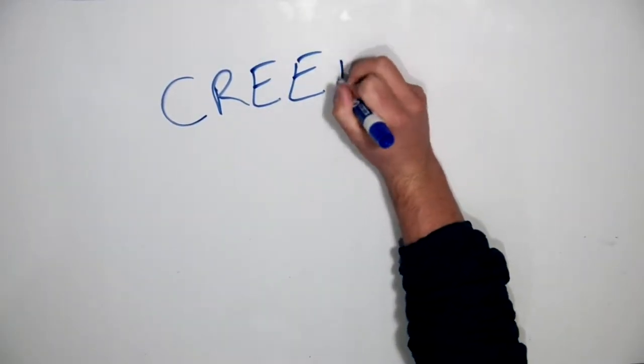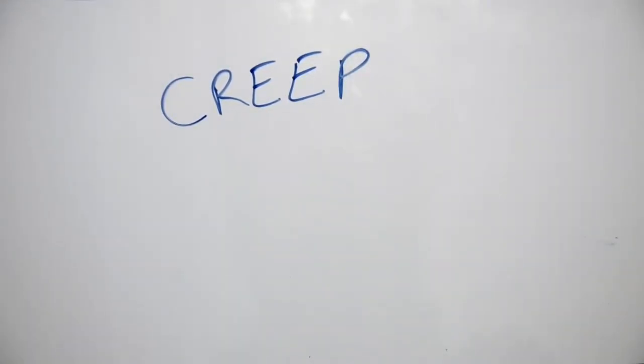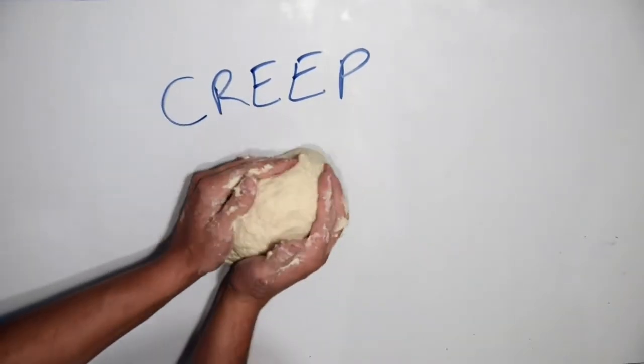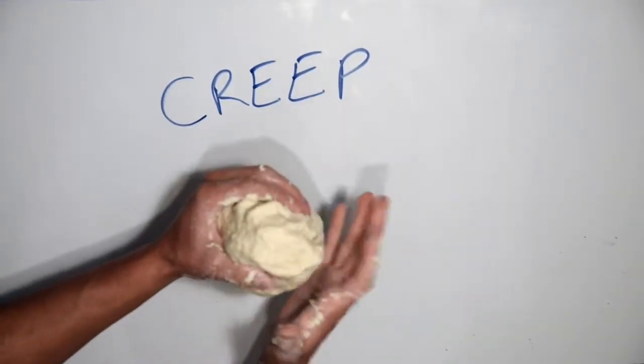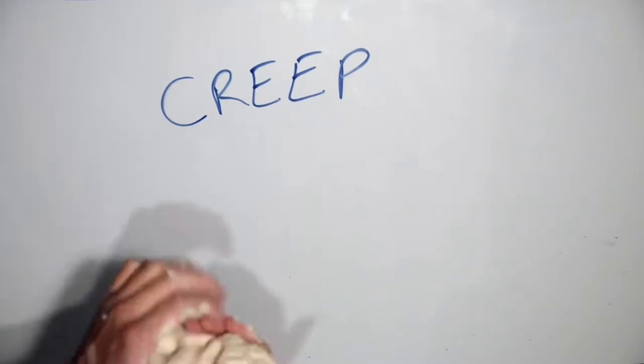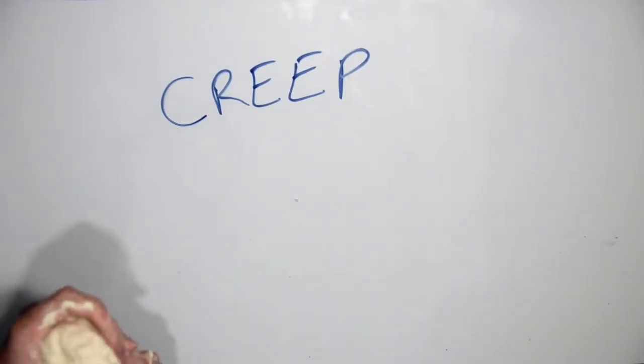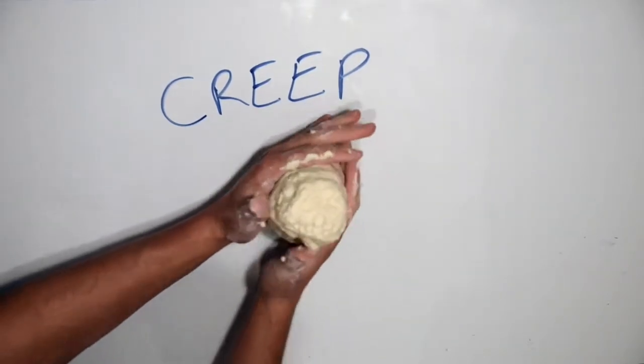Viscoelasticity in polymers can allow them to flow like a fluid over time. This is called creep. For an example, let's look at bread dough. Initially, the bread dough stands under its own weight, but with time the dough starts to fall and flow over the board, like a fluid.